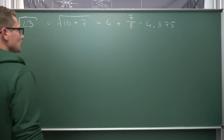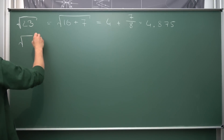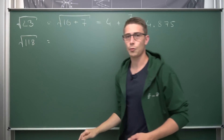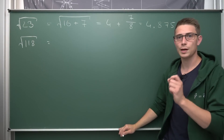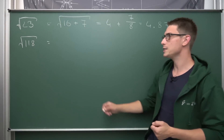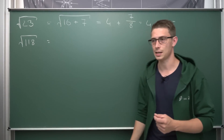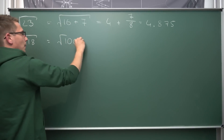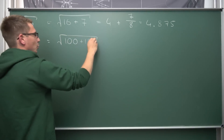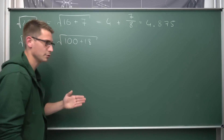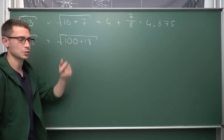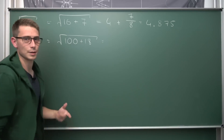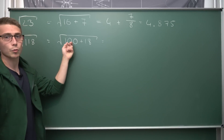Let's try the square root of 118. What is the nearest perfect square below 118 where we still need to add something to reach 118? That would be 100. Square root of 100 gives us 10. So we have the square root of 100 plus 18. At some point you won't need to think about this — finding the bounding perfect squares becomes second nature with practice.